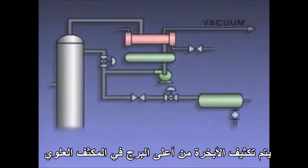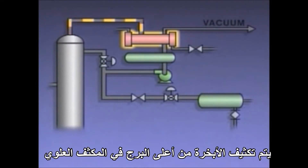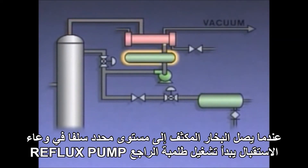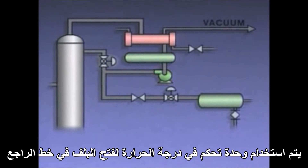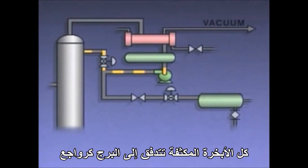The vapor from the top of the column is condensed in the overhead condenser. When the condensed vapor reaches a predetermined level in the receiver, the reflux pump is started and a temperature controller is used to open a valve in the reflux line.